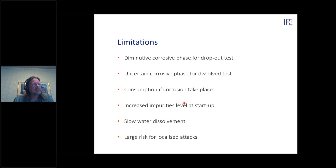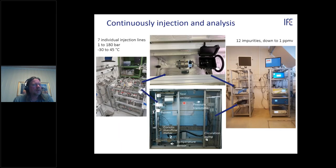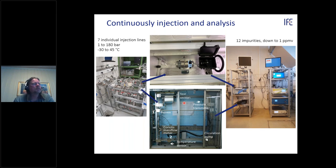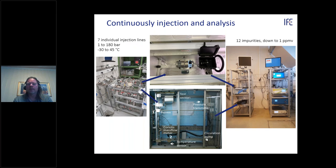To realistically mimic CO2 transport conditions, we built a system with continuous injection and continuous analysis. We needed to replenish impurities if they were being consumed — as we saw with nitrogen dioxide causing high corrosion. We created an injection rig with seven individual injection lines, ensuring impurities do not meet until they are inside the autoclave. One outlet stream runs to an analyzing system capable of detecting at least 12 different impurities.